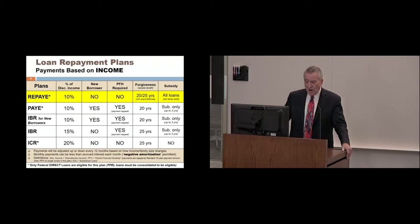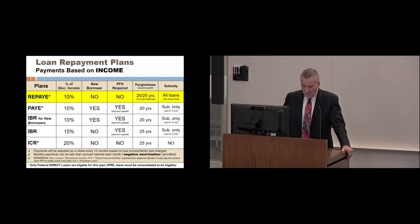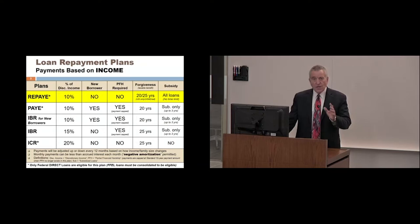So REPAYE offers the potential for a greater subsidy benefit than the other income-driven plans in situations where negative amortization is occurring — where your monthly payment is not enough to cover the interest accrued that month. Payments with income-driven plans are adjusted once every 12 months, up or down, based upon changes in your household's adjusted gross income and family size.